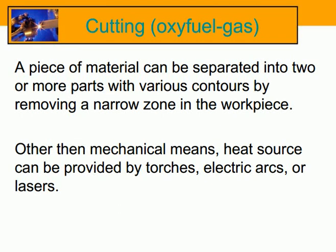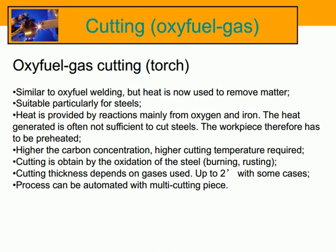Cutting: a piece of material can be separated into two or more parts with various contours by removing the narrow zone in the workpiece. Other than mechanical means, a heat source can be provided by torches, electric arcs, or lasers. Oxyfuel gas cutting uses a torch similar to oxyfuel welding, but heat is now used to remove matter.